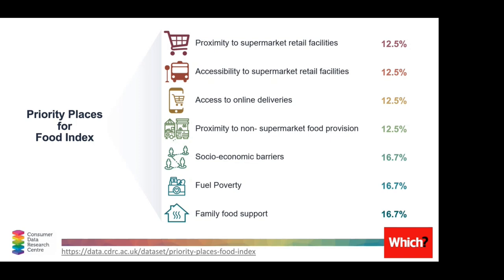We also wanted to balance that against the domains that measure the inability or struggle for neighbourhoods to actually access those foods — the bottom three domains, which reflect more the socioeconomic status of the different neighbourhoods. More information about the indicator data, the domains and the index construction can be found in the Priority Places technical report, available at the link shown at the bottom of this slide.